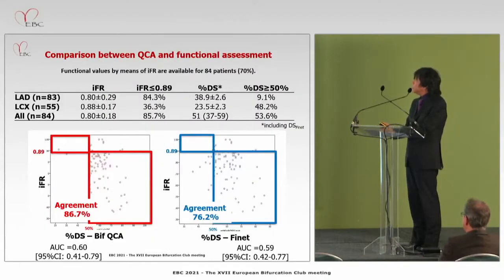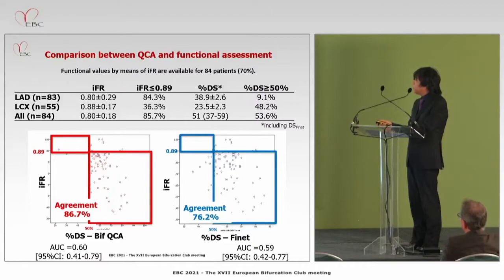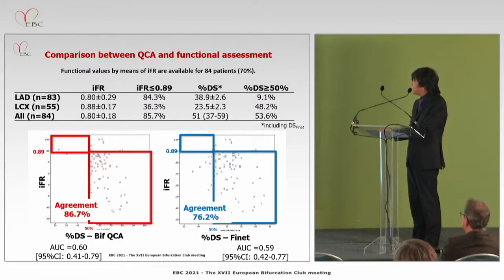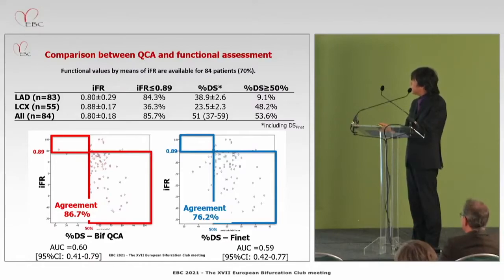Comparing QCA with functional assessment: IFR was used systematically to assess significance of the left main stenosis toward both LAD and circumflex. Average IFR was very low — 0.80 in LAD and 0.88 in circumflex. Agreement between bifurcation QCA using a 50% cutoff versus IFR of 0.89 was 86.7%. Using Finet Law, agreement was slightly lower at 76%. AUC was 0.60 and 0.59 respectively.